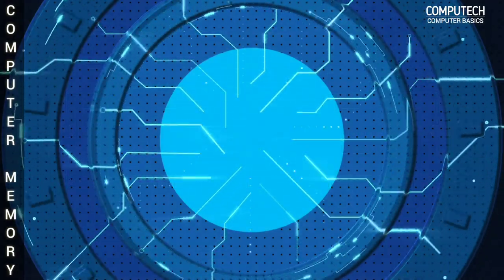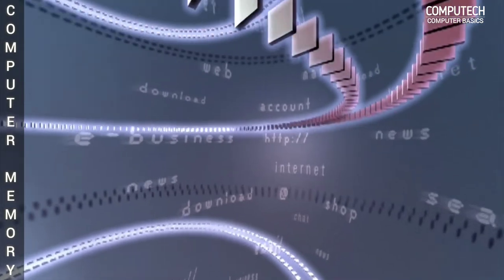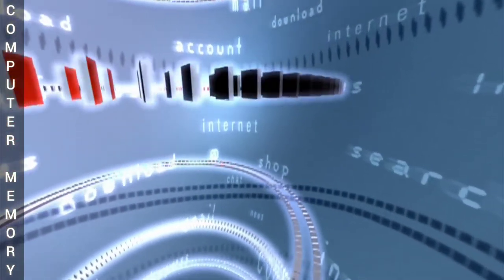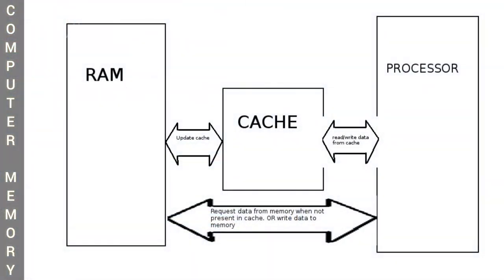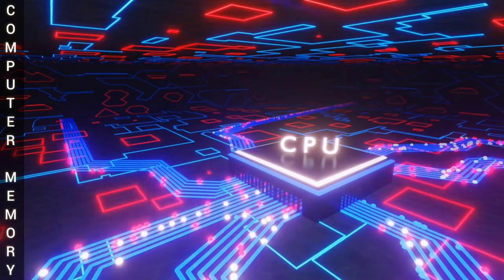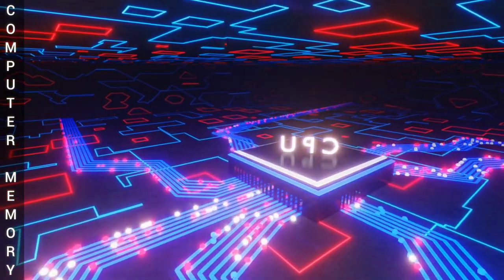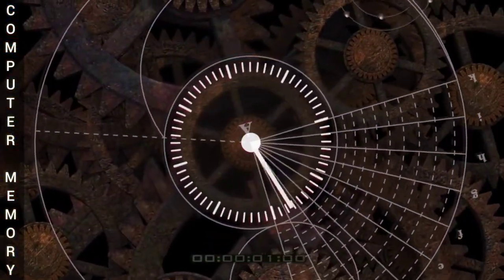Cache memory provides the fastest data storage and access by storing instances of programs and data routinely accessed by the processor. When a processor requests data that already has an instance in the cache memory, it does not need to go to the main memory or to the hard disk drive to read the data. It acts as a buffer between RAM and CPU. The processor checks whether a corresponding entry is available in the cache memory every time it needs to read or write a location, thus reducing the time required to access information from the main memory.